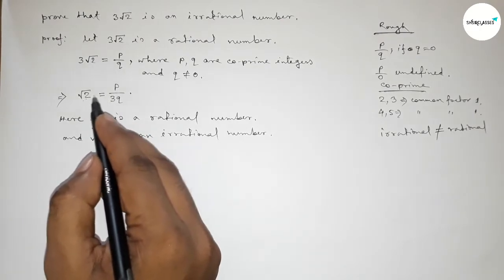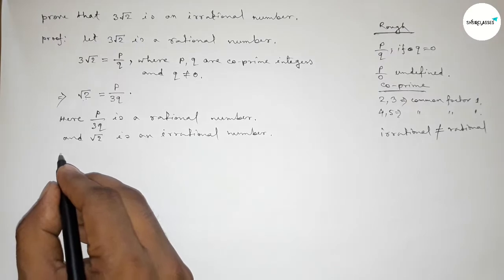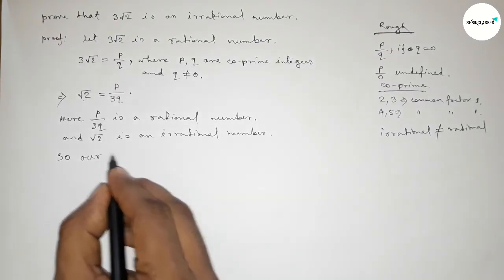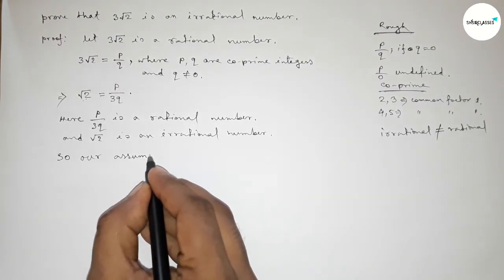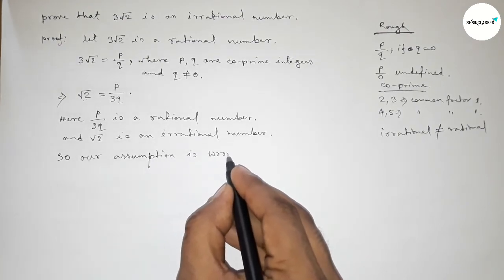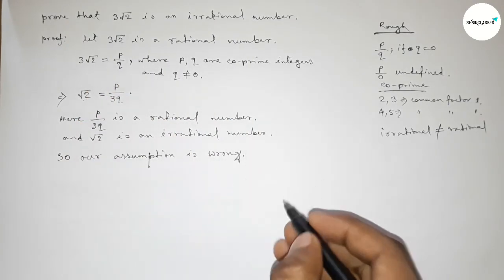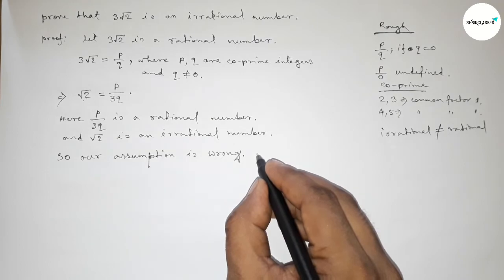But here a rational number equals an irrational number, which contradicts our assumption. So our assumption is wrong. First we took 3 root 2 is a rational number, so this is wrong. So 3 root 2 is not a rational number.